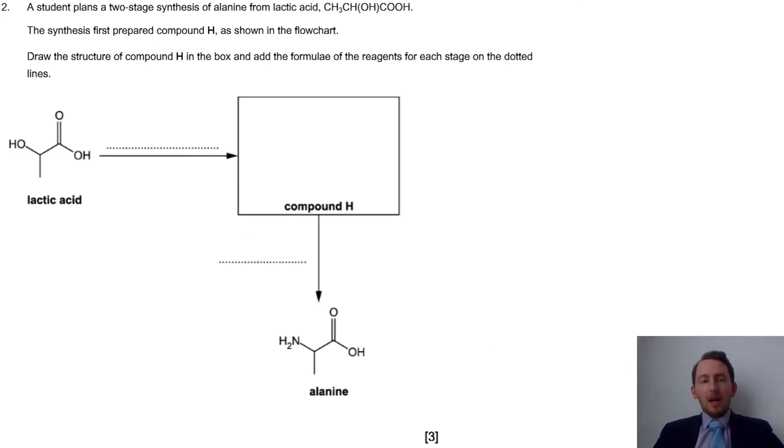Then we have our last question here. Again, we've got two-step synthesis. We need to suggest a structure for compound H with reagents, and then we need the reagents we're going from compound H to alanine.